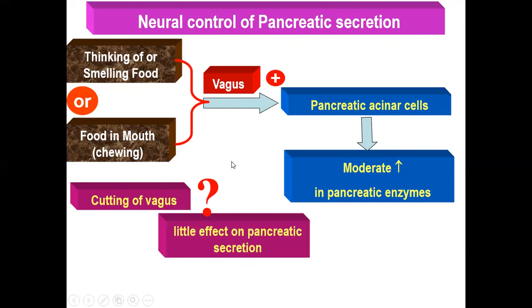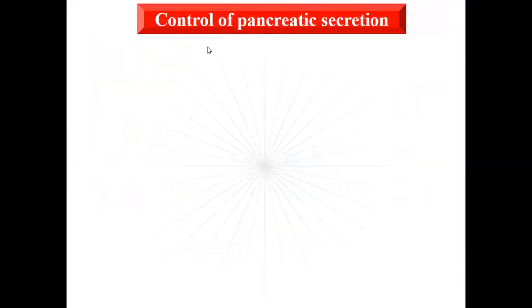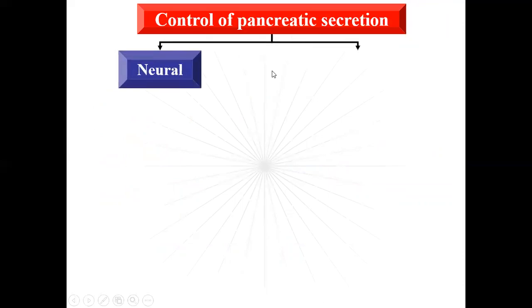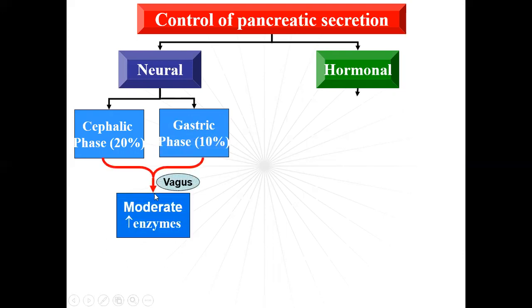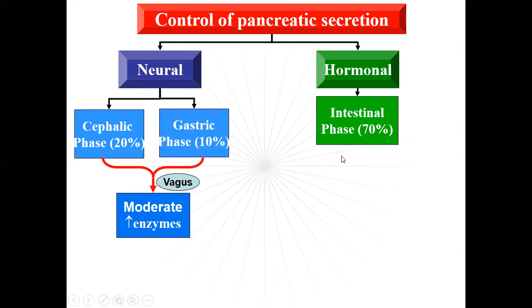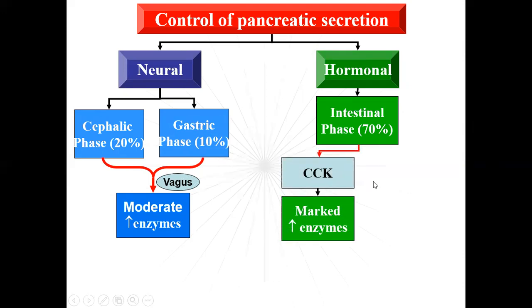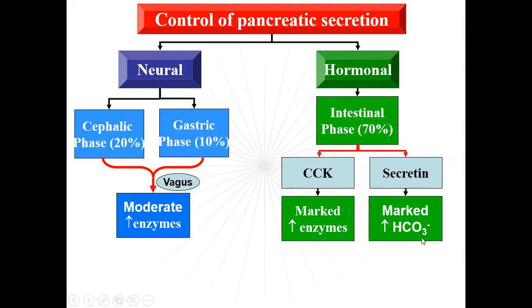If the vagus nerve is cut, there is little effect on pancreatic secretion. Overall control: the neural (cephalic) phase accounts for 20%, the gastric phase 10%, and the intestinal hormonal phase — via CCK and secretin — accounts for 70%, producing a marked increase in enzymes and a marked increase in aqueous HCO3 secretion. This diagram summarizes the control of pancreatic secretion.